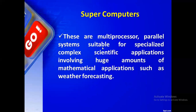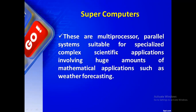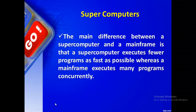Supercomputers use multi-processor parallel systems. They are used for scientific applications and huge mathematical computations requiring high accuracy. Multi-processor means it can do multiple tasks at the same time. Our computer can do about 10 tasks; a mainframe can do thousands; a supercomputer can do even more. The cost is correspondingly very high.